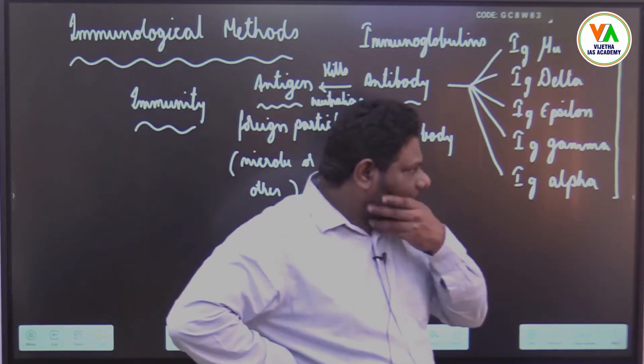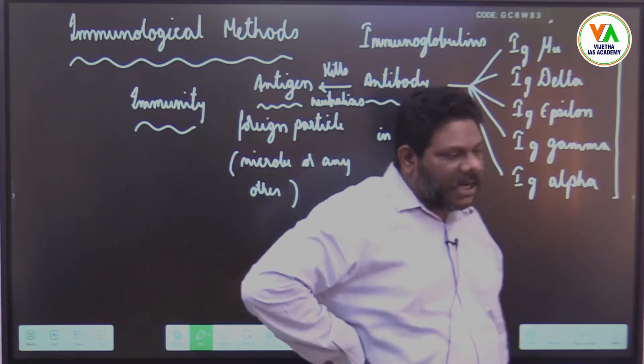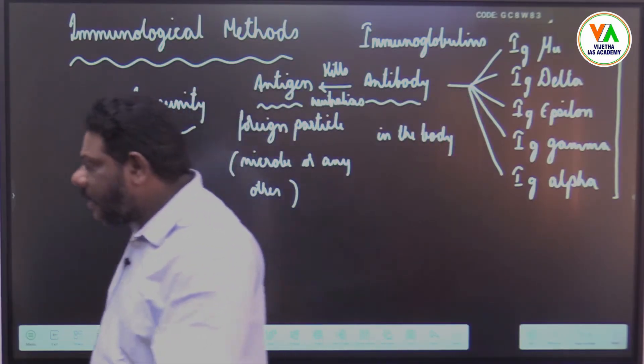Different immunoglobulins are, you can write them: immunoglobulin mu, delta, epsilon, gamma, and alpha.